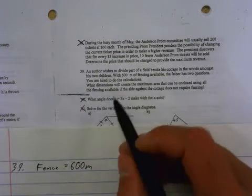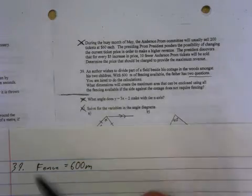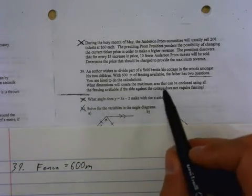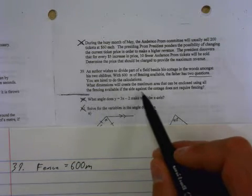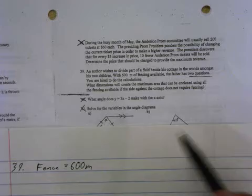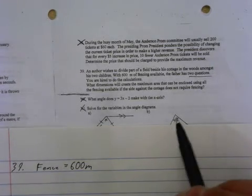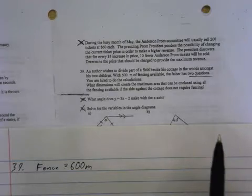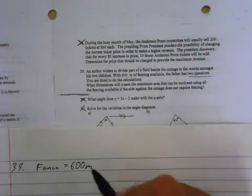Whatever. The two questions thing is confusing me because I'm hired to do the calculations and it says, what dimensions will create the maximum area that can be enclosed using all the fencing available if the side against the cottage does not require fencing? That is one question. I'm guessing maybe he wants to know what the max area is as well. Whatever, if he didn't ask his second question, I'm not going to answer it. So we want the dimensions.